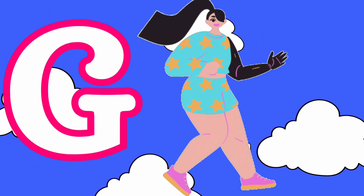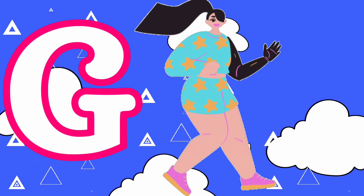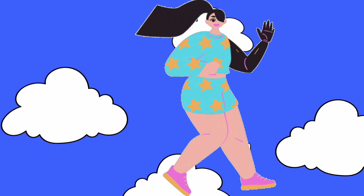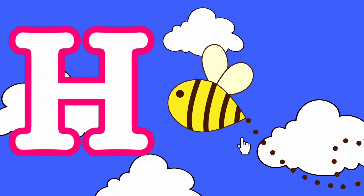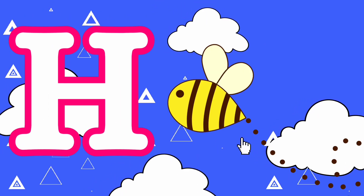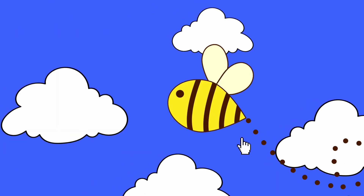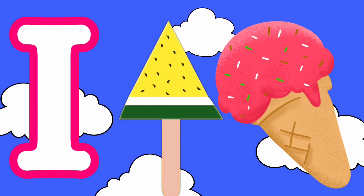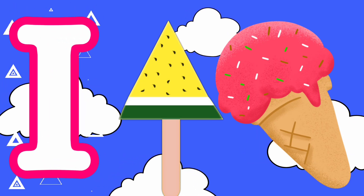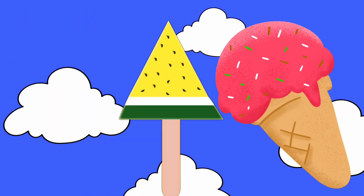F is for Flower. G is for Girl. Girl. H is for Honey Bee. Honey Bee.